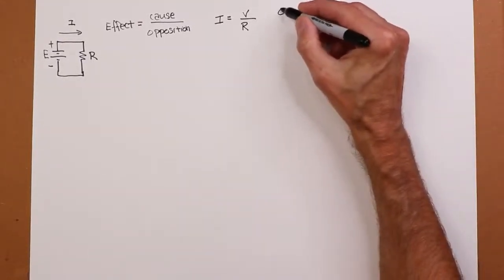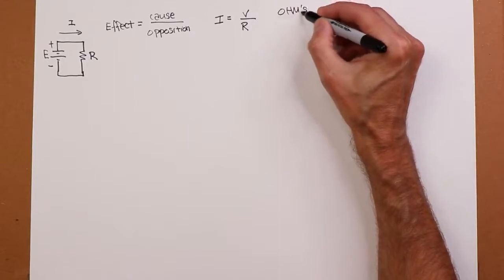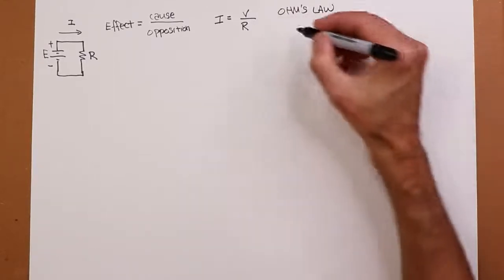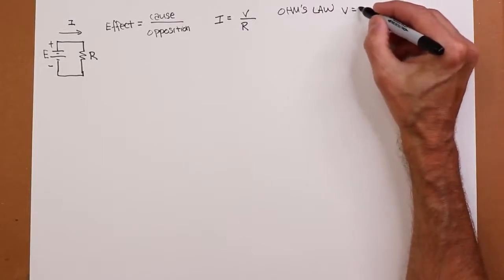This is Ohm's Law, named after Georg Ohm. It's very often written like this: V is equal to I times R.